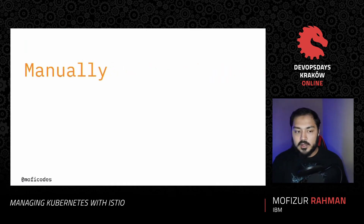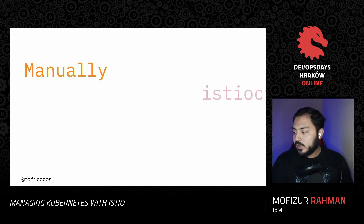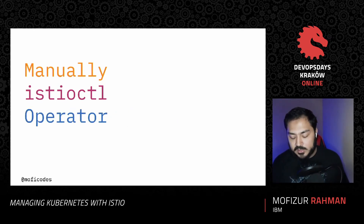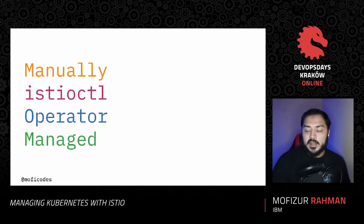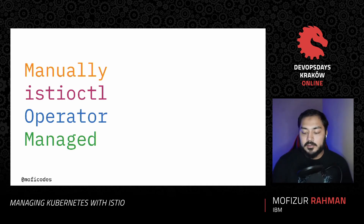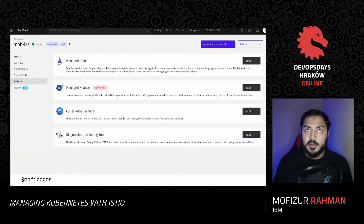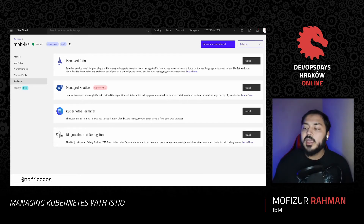To install Istio today there are a few options. Number one is installing it manually by running Istio's YAML configs, which is probably not what anyone would do today. Then you have IstioCtl, which has a Helm-like API and uses Helm underneath to install Istio to any cluster. Then you have operators — if you're familiar with the operator framework, you can install Istio that way too. Finally, you can get managed Istio: several cloud providers including IBM Cloud, Oracle, and Google Cloud offer managed Istio where you click a button to get Istio installed, and as new versions come out you get updated automatically.